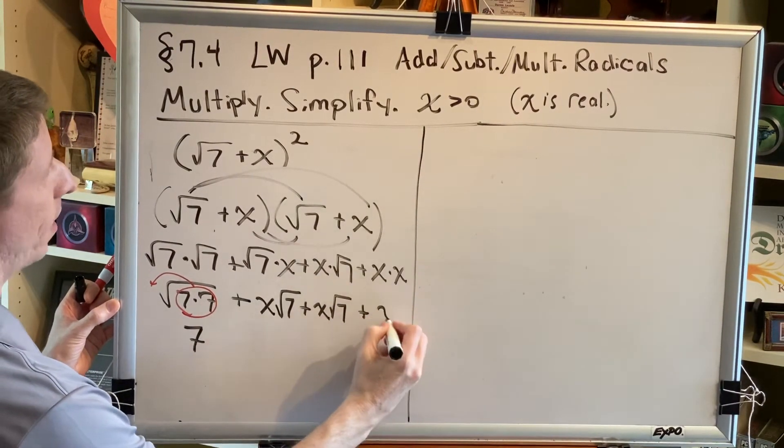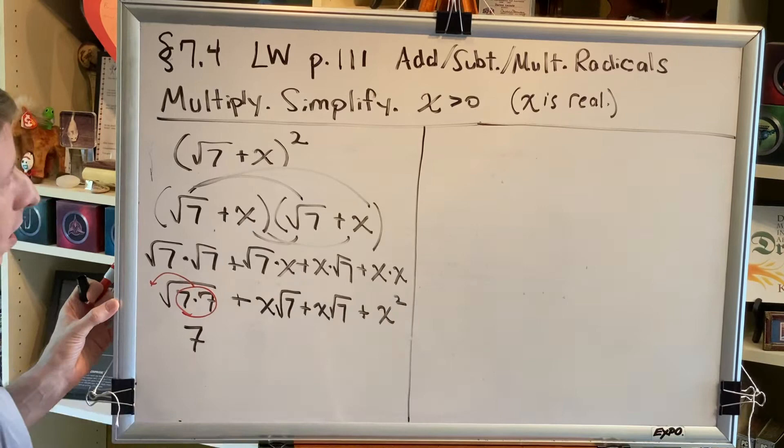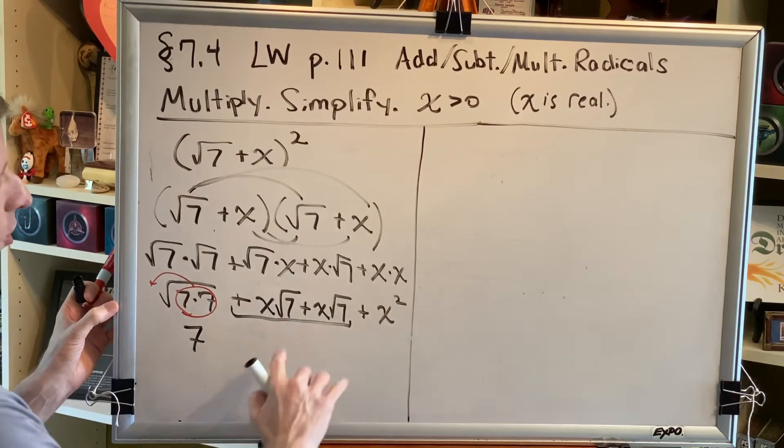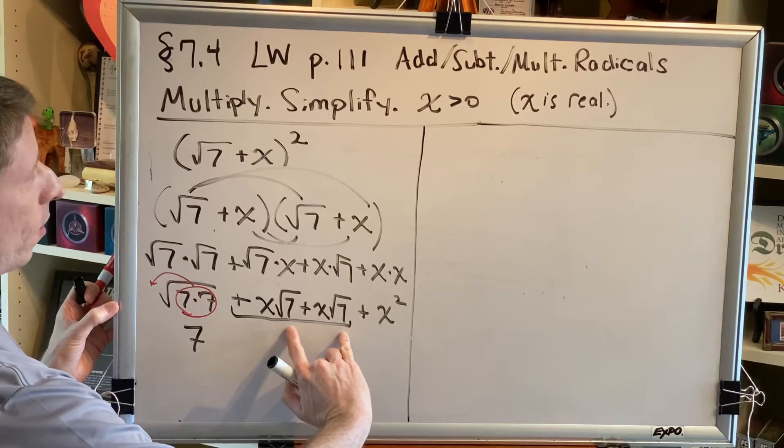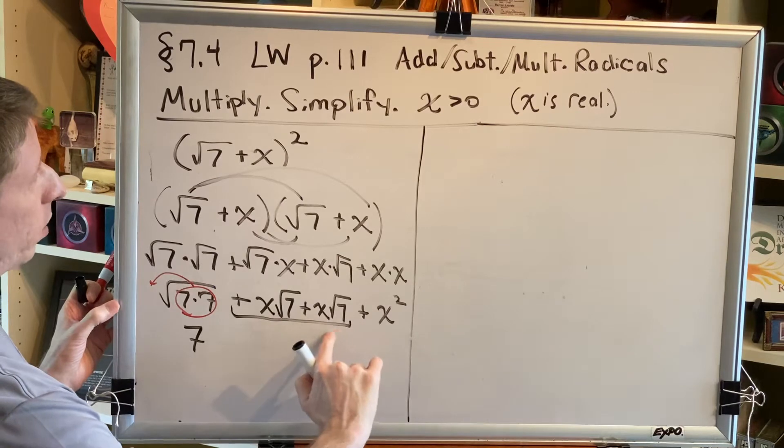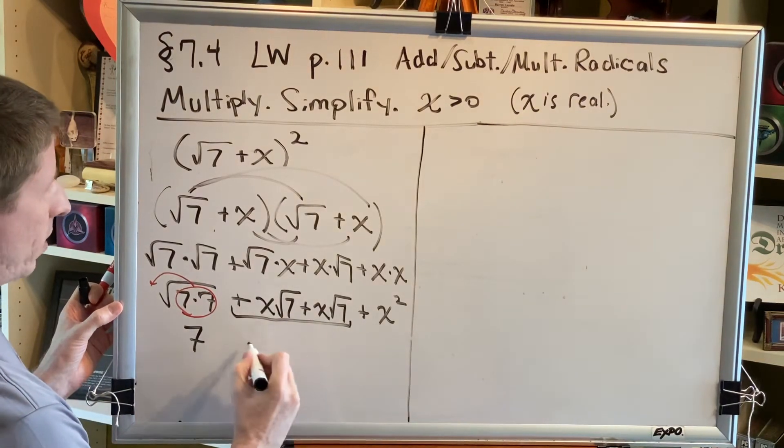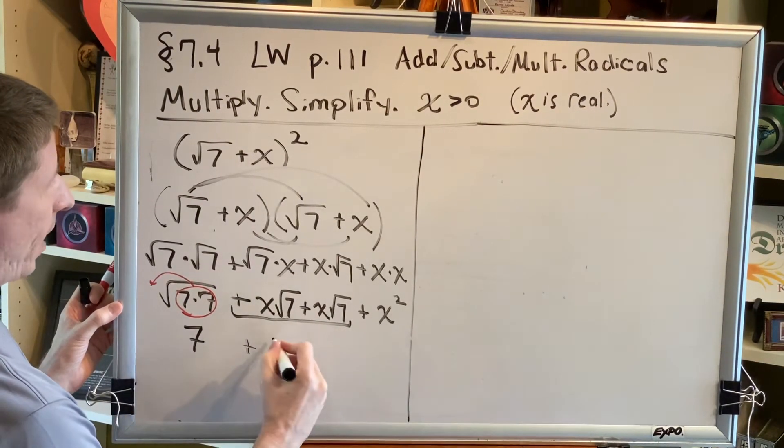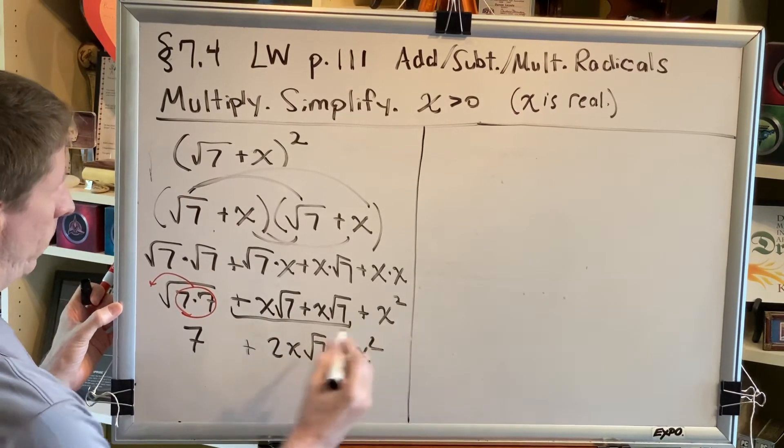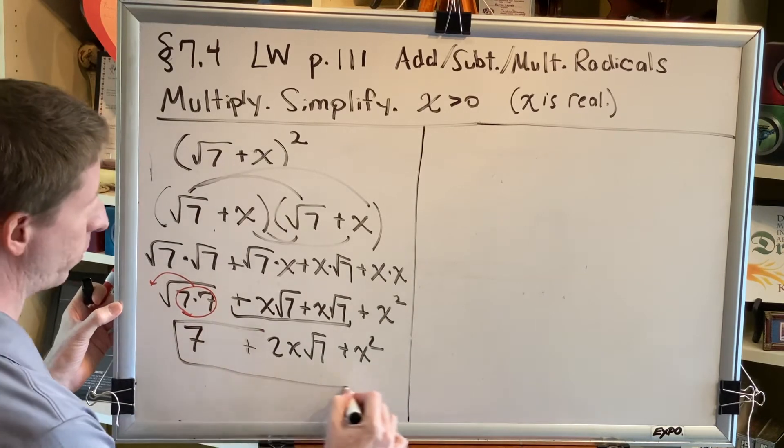And x times x is x squared. Now, these are like radicals which can be combined by combining the coefficients. Remember, the radical does not change. So x root 7 plus x root 7 would be the same thing as x plus x, which is 2x root 7. This is our final answer for this problem.